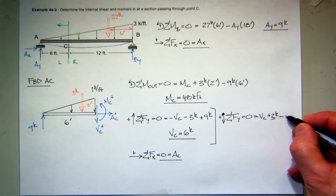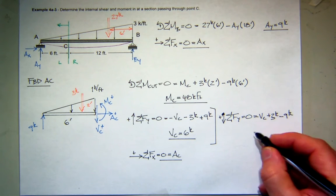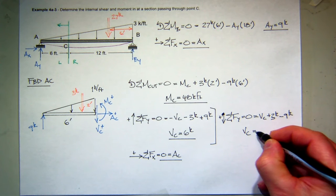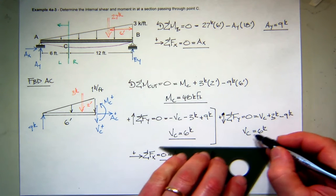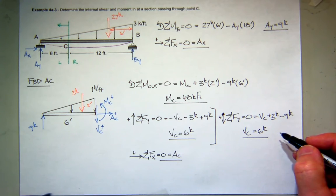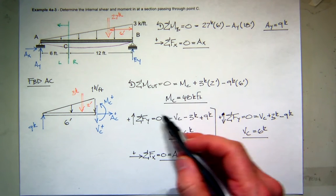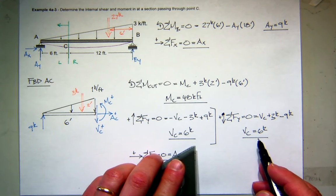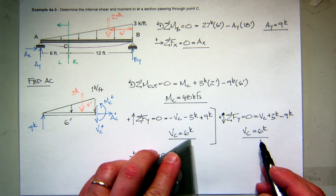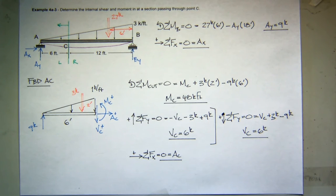So solve for the shear at C, and what do you get? 6. So it doesn't matter which way you choose here. All that matters is that you assume positive. If you get positive, it's positive shear force. If you get negative, it's negative shear force.